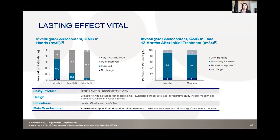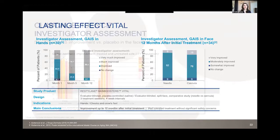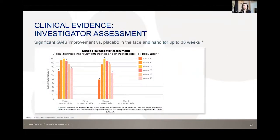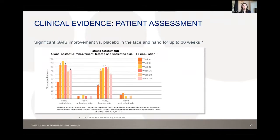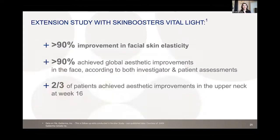An extension study on Vital Light showed over 90% had improvement in facial skin elasticity, 90% achieved global aesthetic improvement in the face per both investigator and patient assessment, and two-thirds achieved aesthetic improvement in the upper neck at week 16. The neck has become an increasingly important treatment area, particularly as remote work and device use have highlighted neck laxity and horizontal necklace lines.